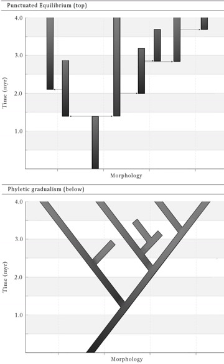Much confusion has arisen over what proponents of punctuated equilibrium actually argued, what mechanisms they advocated, how fast the punctuations were, what taxonomic scale their theory applied to, how revolutionary their claims were intended to be, and how punctuated equilibrium related to other ideas like saltationism, quantum evolution, and mass extinction.